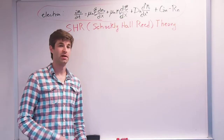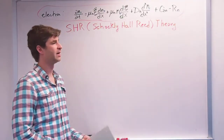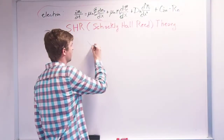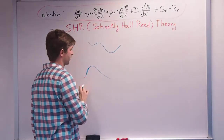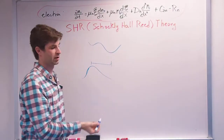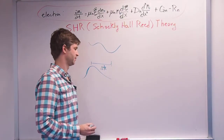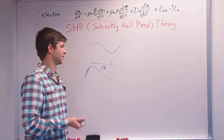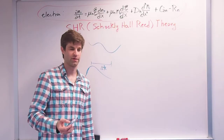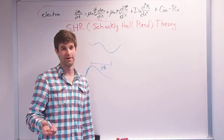We left off last time talking about mobility. Silicon and germanium are indirect bandgap semiconductors. That means that in order for an electron to move into the conduction band and create an electron-hole pair, it needs to overcome some change in momentum. So the likelihood of this happening is very small, but electron-hole pair generation is the fundamental, most important part of photovoltaics, LEDs, and lasers.